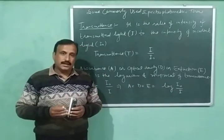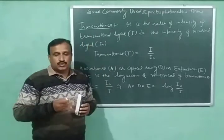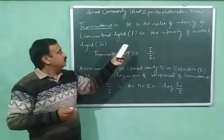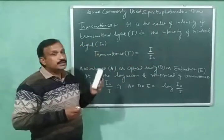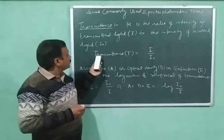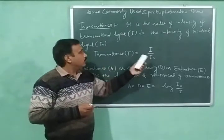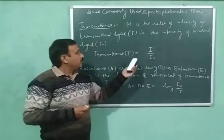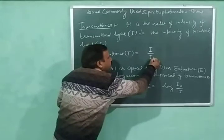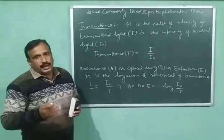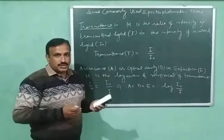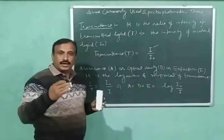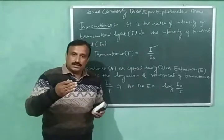The first term is transmittance. Transmittance is defined as the ratio of intensity of transmitted light to the intensity of incident light. The transmittance T is equal to I upon I-naught, where I is the intensity of transmitted light and I-naught is the intensity of incident light. Transmittance varies directly with the intensity of transmitted light and inversely with the intensity of incident light.